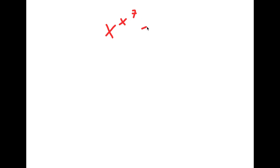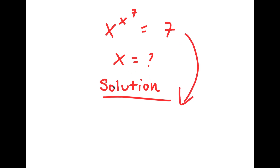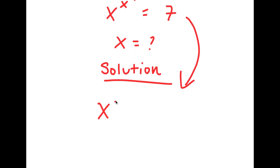In this problem, I have x to the power of x to the power of 7 is equal to 7. I want to find the value of x. For my solution, I'm going to first start by rewriting my problem over here: x to the power of x to the power of 7 is equal to 7.